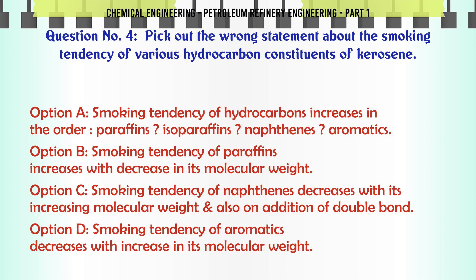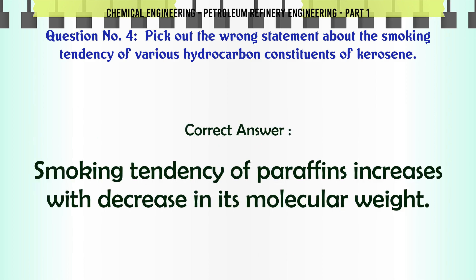Pick out the wrong statement about the smoking tendency of various hydrocarbon constituents of kerosene. A. Smoking tendency of hydrocarbons increases in the order: Paraffins, Isoparaffins, Naphthenes, Aromatics. B. Smoking tendency of paraffins increases with decrease in its molecular weight. C. Smoking tendency of naphthenes decreases with increasing molecular weight and on addition of double bond. D. Smoking tendency of aromatics decreases with increase in its molecular weight. The correct answer is: Smoking tendency of paraffins increases with decrease in its molecular weight.